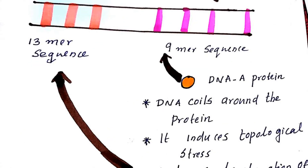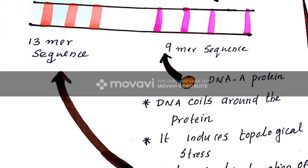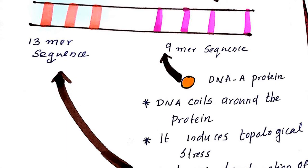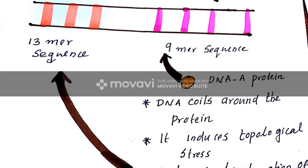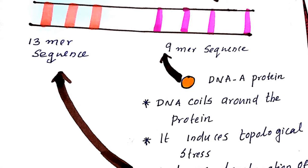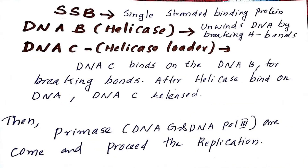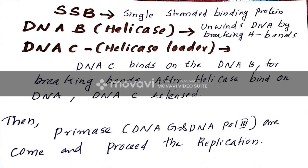When the DnaA protein binds on the 9-mer sequences, DNA coils around this protein. This induces a topological stress, which in turn induces the denaturation of the 13-mer sequences. After that, the SSB protein and helicase protein come into play.